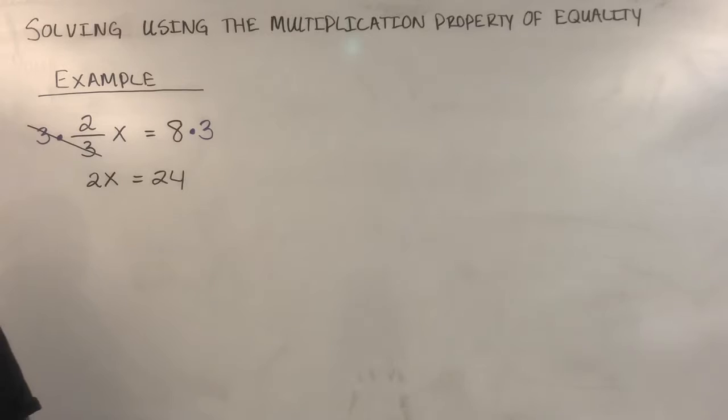Now I just have to get x by itself by getting rid of that 2. To get rid of the 2, I'm going to divide both sides by 2. Again, the 2s cancel out, and I have x equals 12.